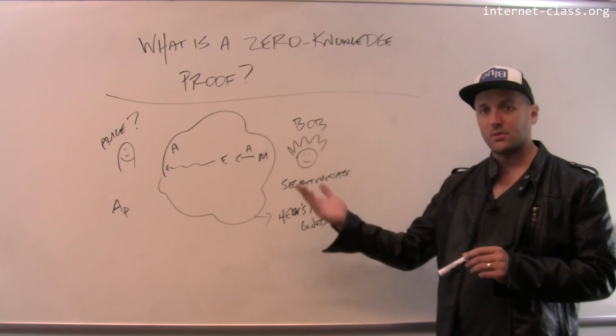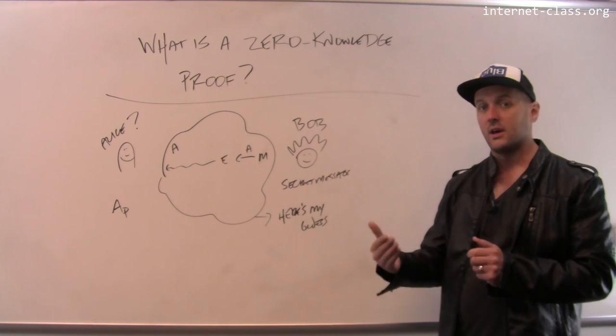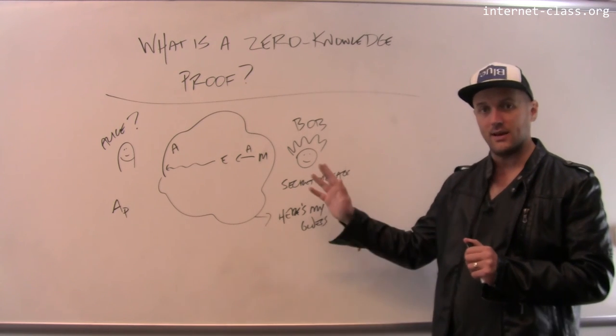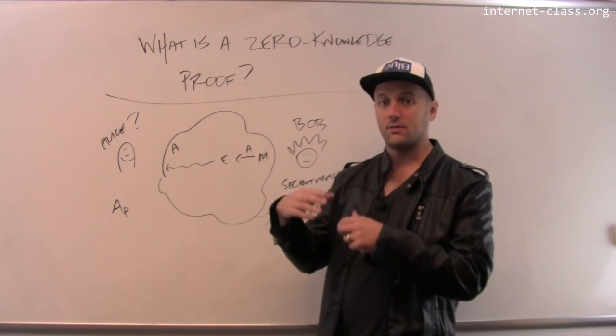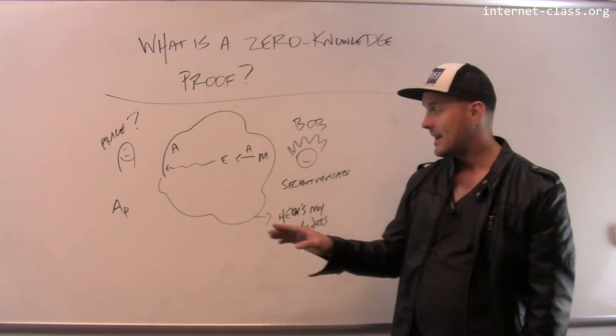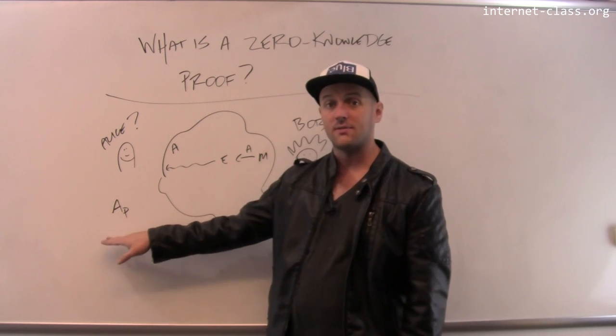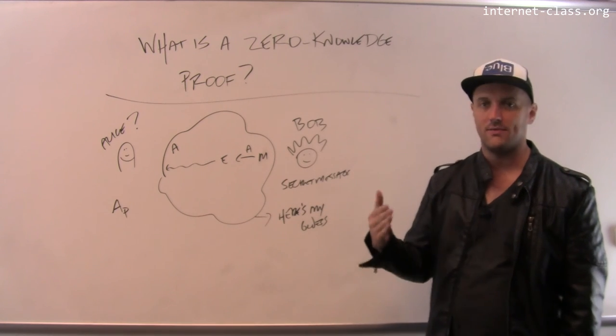So this is an example of an interactive proof. It involves communication between two parties. And at the end of this, Bob is convinced that Alice is the real Alice. And Alice has not divulged any information about her private key.